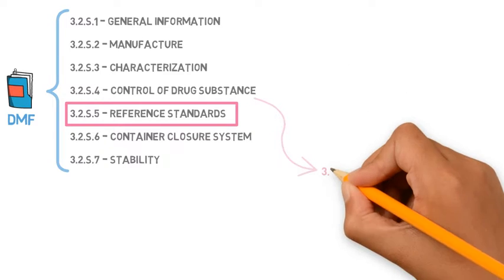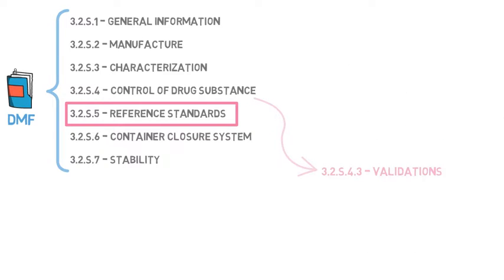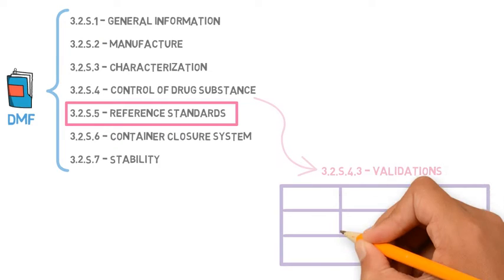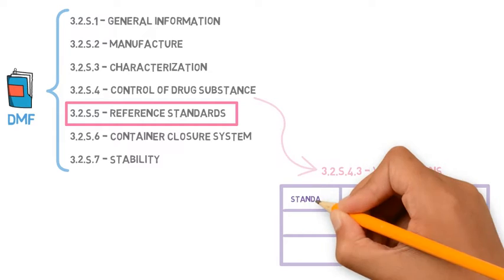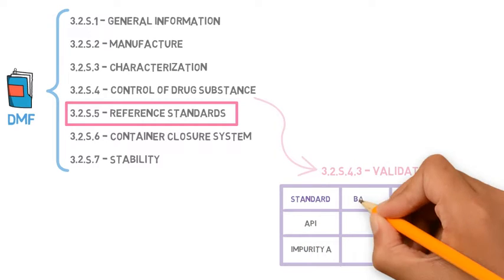Standards are used both for the quality control analysis and for the analytical validations which were described in the previous section. Within the validation reports, the batches of standards that were used must have been informed.